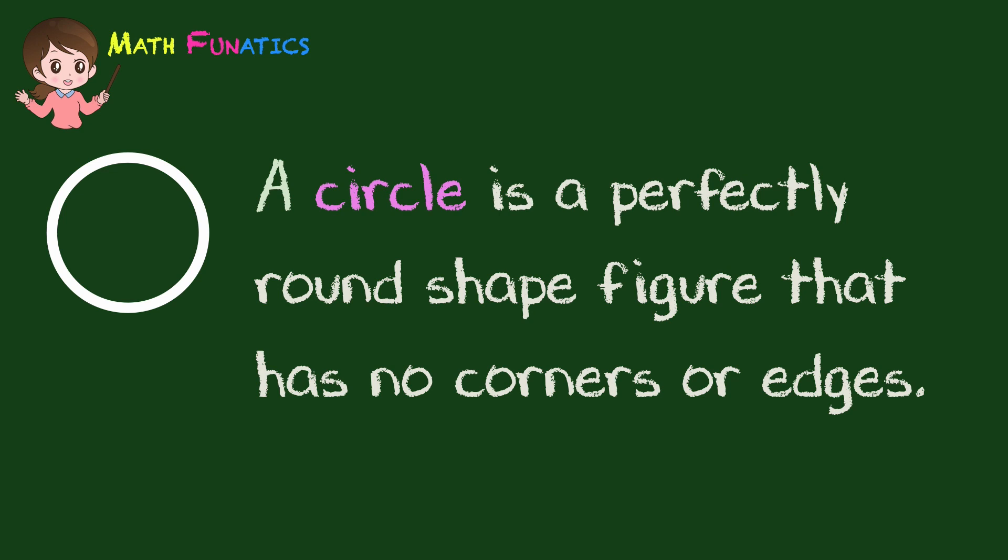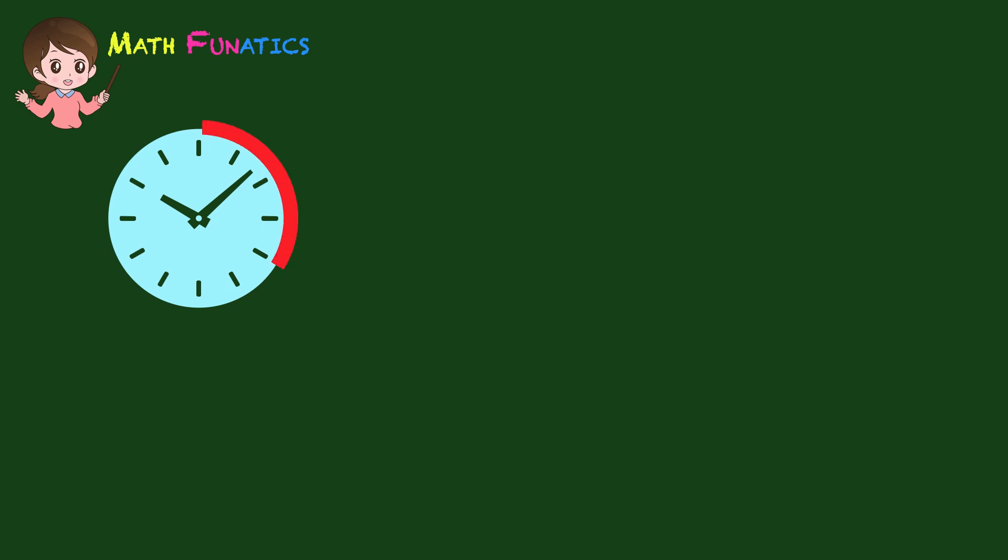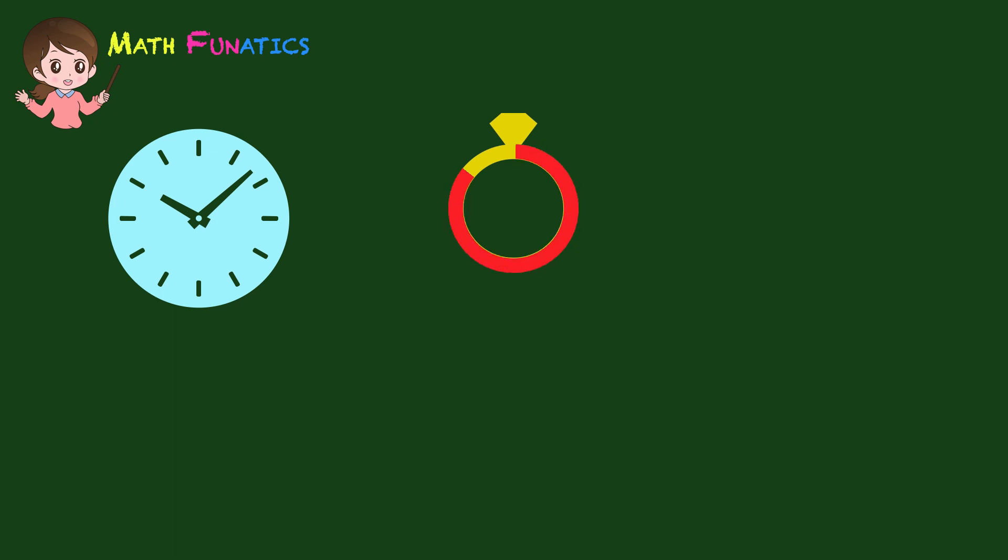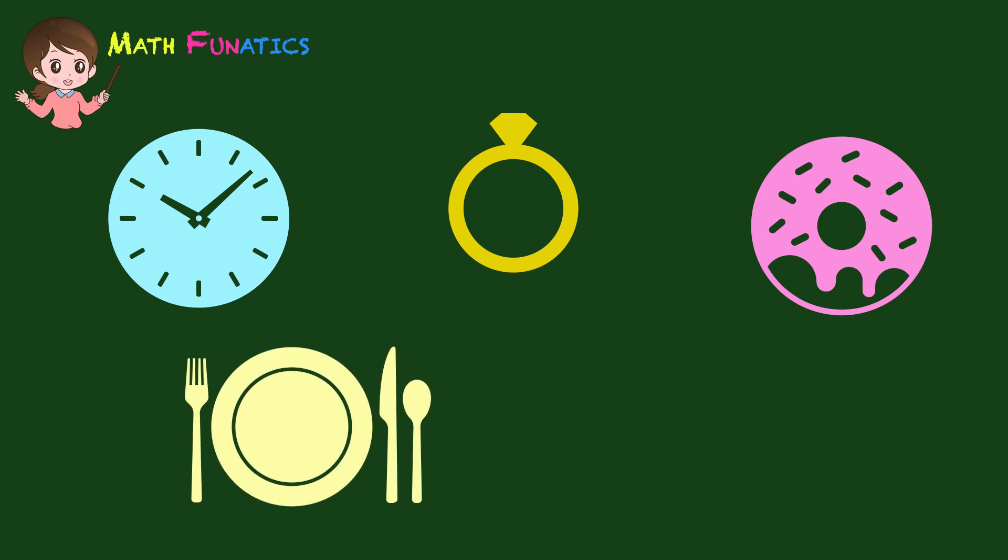We do see things around us with this shape. Let us have some examples. This clock takes the shape of a circle. Another is a ring that also takes the shape of a circle. How about this donut? Do you see the circle in it? This plate that we use for eating also takes the shape of a circle. And this motorcycle has two circular wheels.